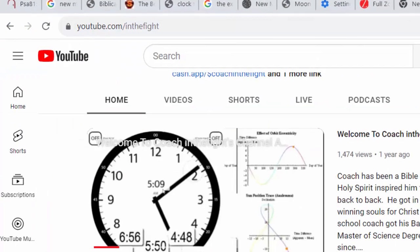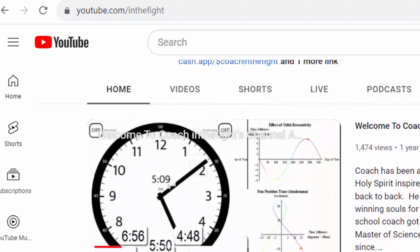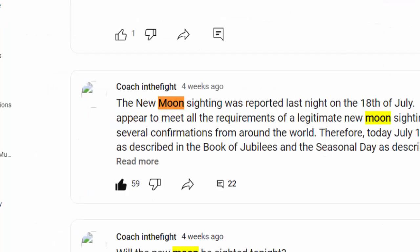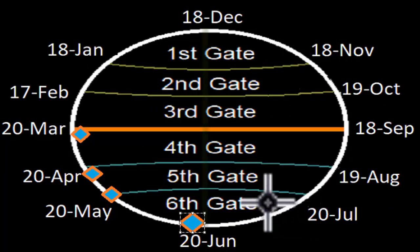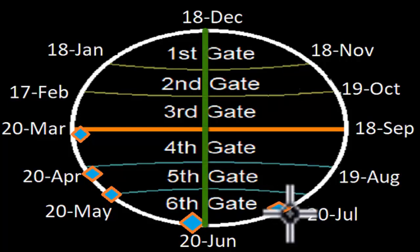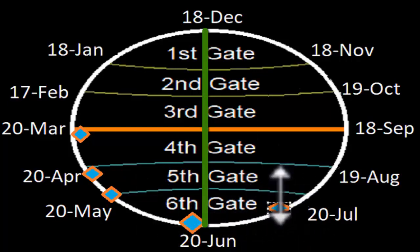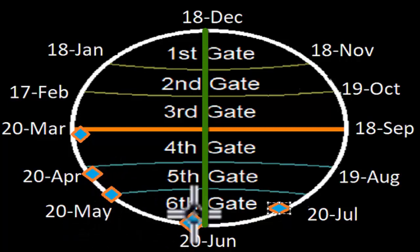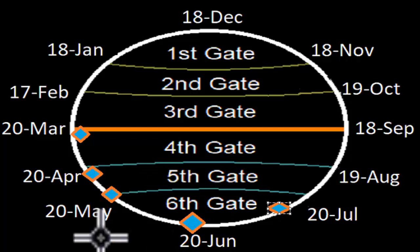Now you have two moons in the same gate. Then there was a zero percent moon on July 17th. Looking at our channel's community section — youtube.com/inthefight — we give new moon reports, and the last one was cited on July 18th. When that new moon occurred, the sun, moon, and stars lined up in that gate — that was the beginning of the fourth month, not the fifth month. Because this moon fell back in the prior gate, you had two moons in the same gate. That's your 13th month — that's why some years have 13 months — and this occurred in the sixth gate.